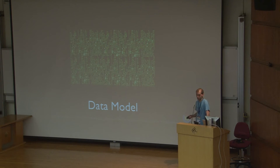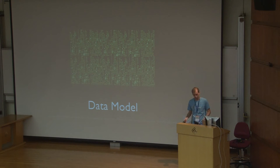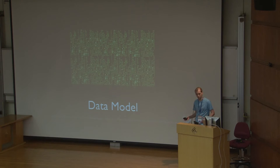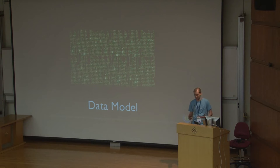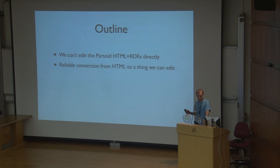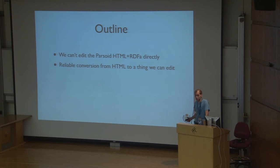A lot of content that comes back from Wikitext would be like a template which renders a whole table, like an Infobox. If we just let you go in and edit that table and delete whole rows or move stuff around, we wouldn't know how to convert that back into template syntax. We have to have some abstract concept — this is one template that you can select, move around, delete, and edit the parameters for. We can't just edit the parsed HTML we get back directly; we have to convert it into something that we can edit.